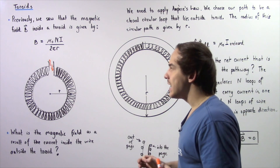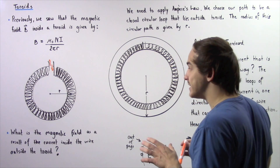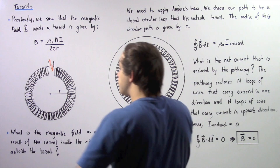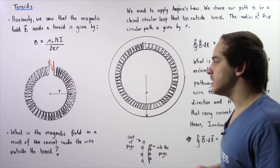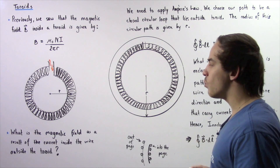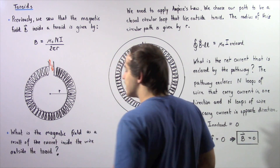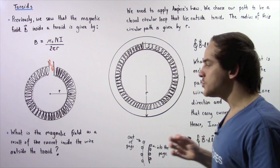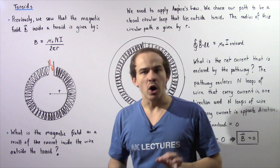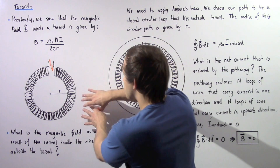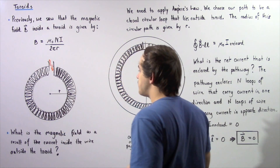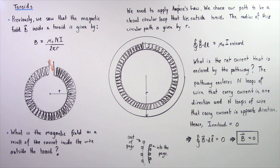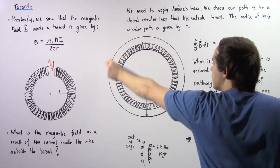What about the magnetic field outside our toroid? We're examining B either in the outer region or the inner hollow region. Let's apply Ampere's Law to determine the magnitude of B in these regions. To apply Ampere's Law, we need to choose a path of integration. We choose our path to be a closed circular loop that lies outside our toroid, as shown in the following diagram.